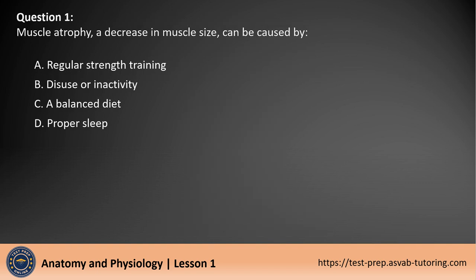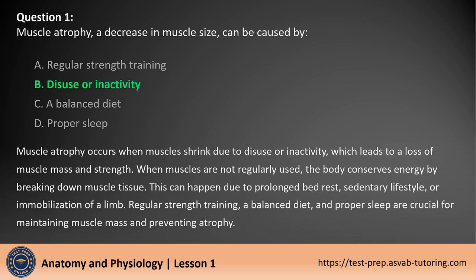Question 1. Muscle atrophy, a decrease in muscle size, can be caused by: A. Regular strength training. B. Disuse or inactivity. C. A balanced diet. D. Proper sleep. The answer is B. Muscle atrophy occurs when muscles shrink due to disuse or inactivity, which leads to a loss of muscle mass and strength.